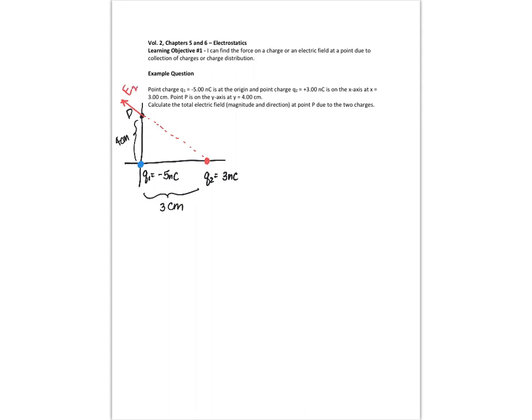Now if I draw the electric field due to charge 1, that's a negative charge, so the electric field will be towards it. So at point P, this electric field is going to be pointing down. Now I have to figure out how big the electric fields are.